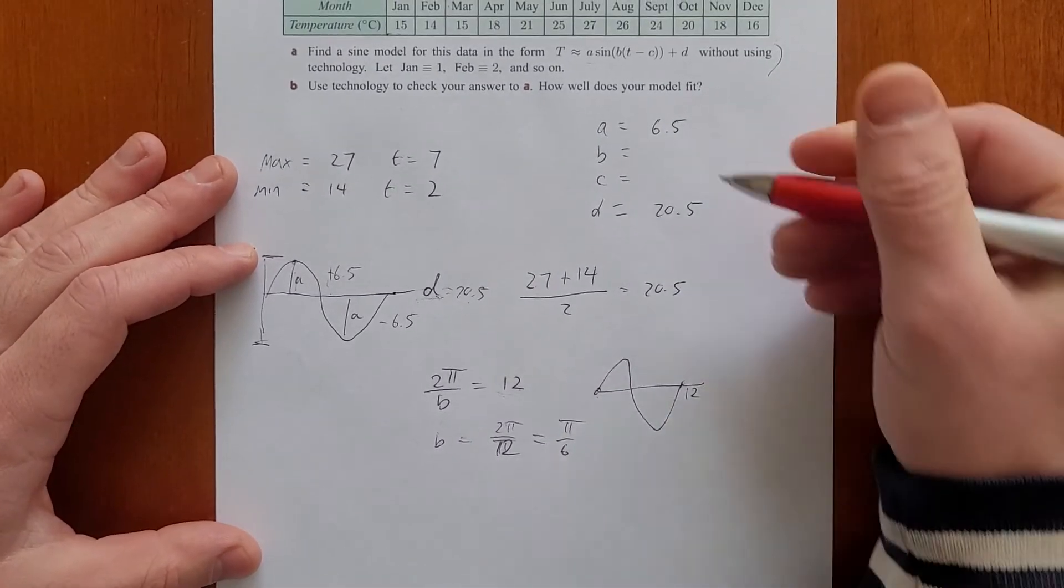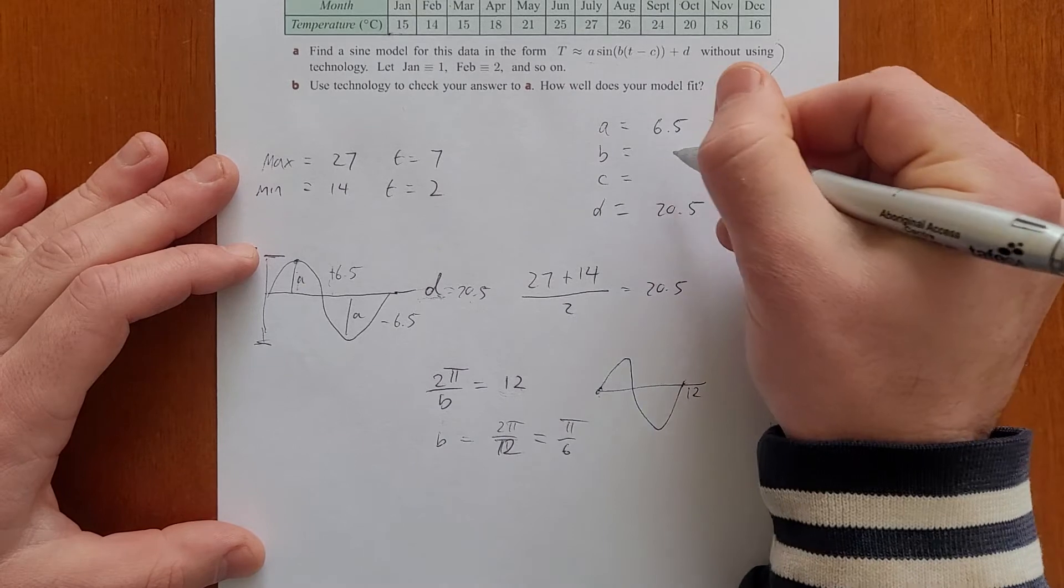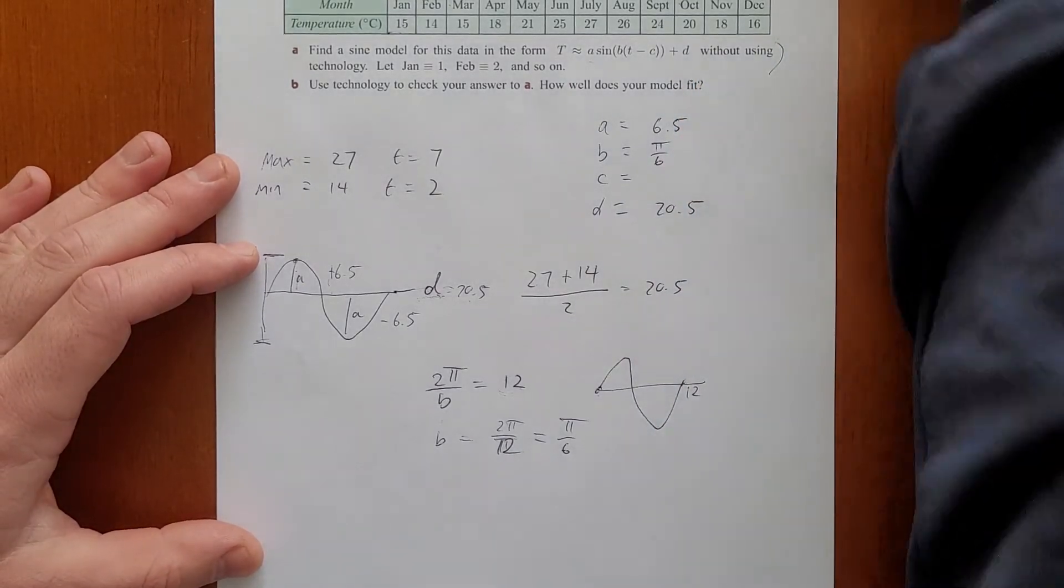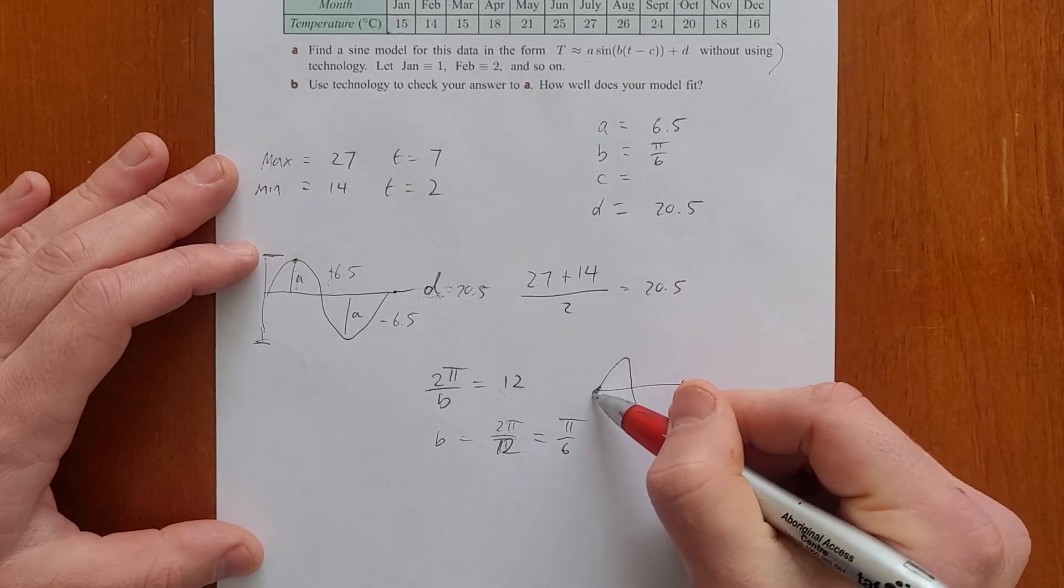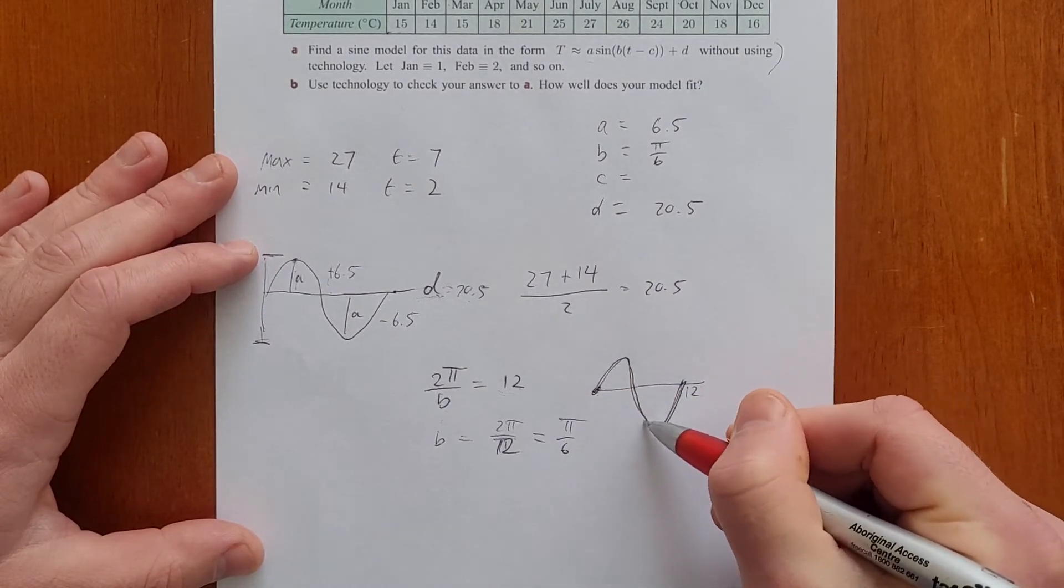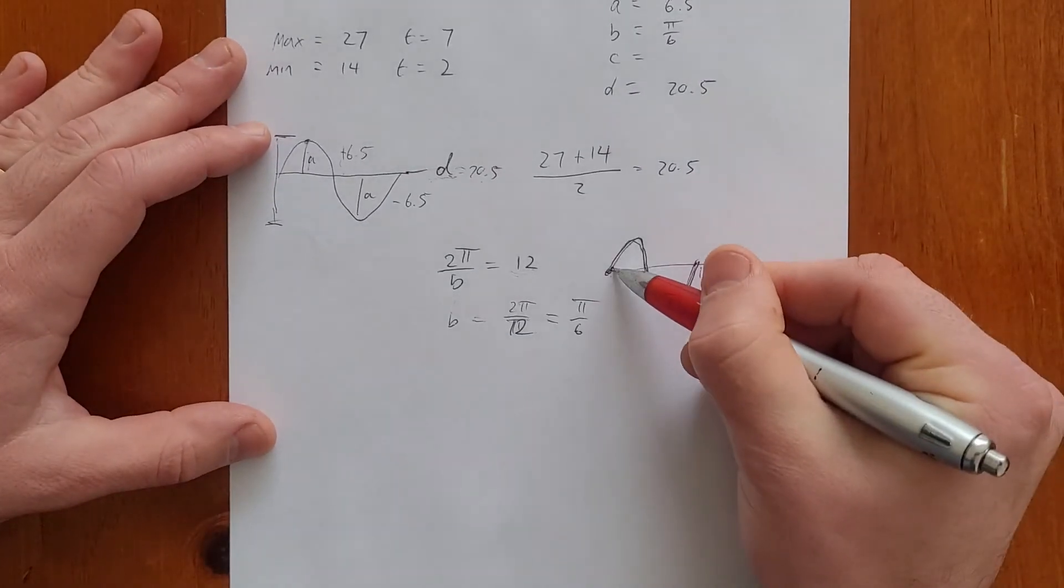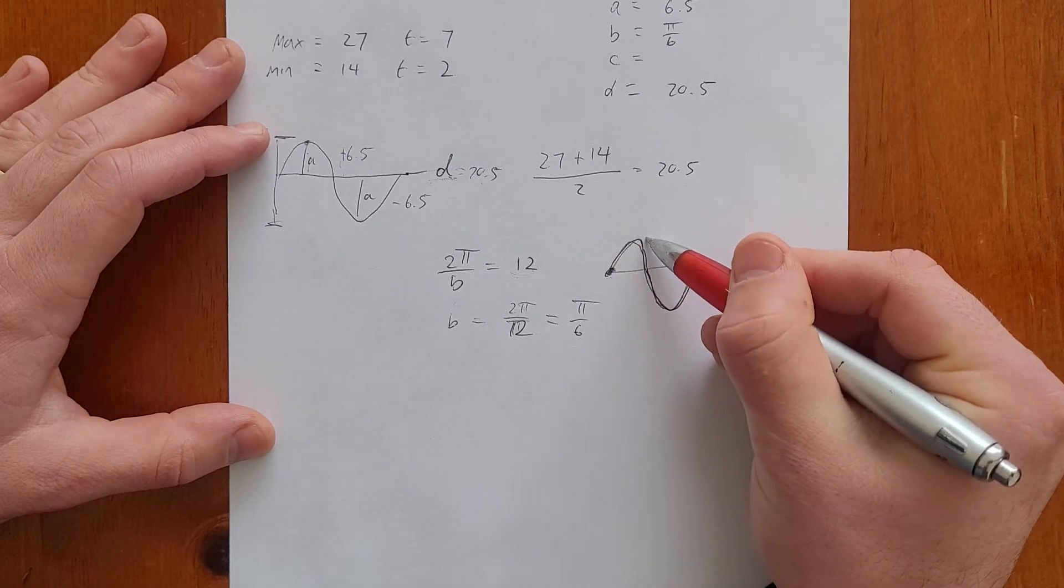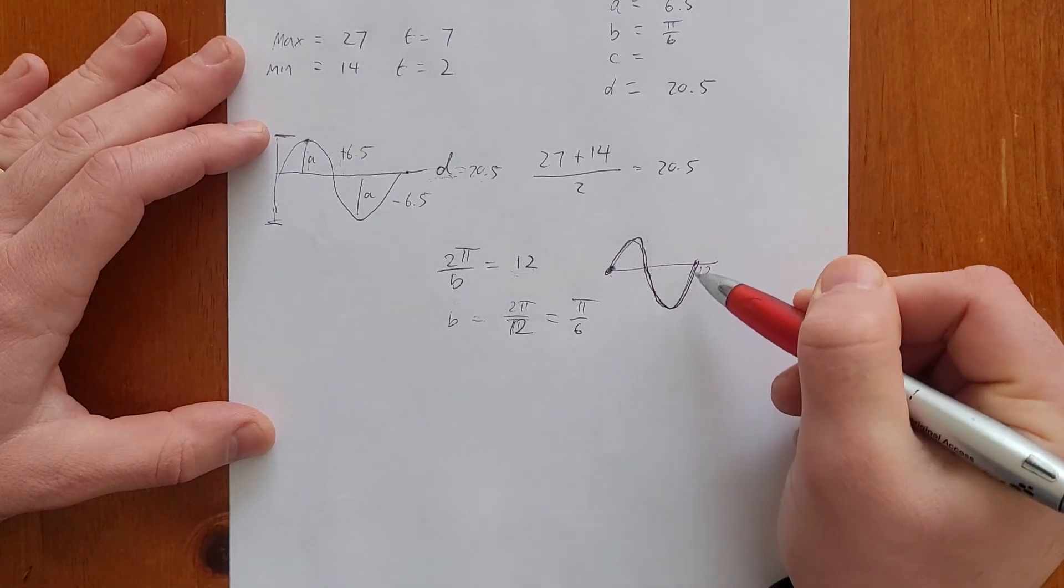We're almost done. So we've got our values of A, B, and D. And I've left C to last because it is a little bit tricky to find. If we think of the sine wave, it goes like this. So it starts on the principal axes, and it goes for a maximum, and then comes down for a minimum.